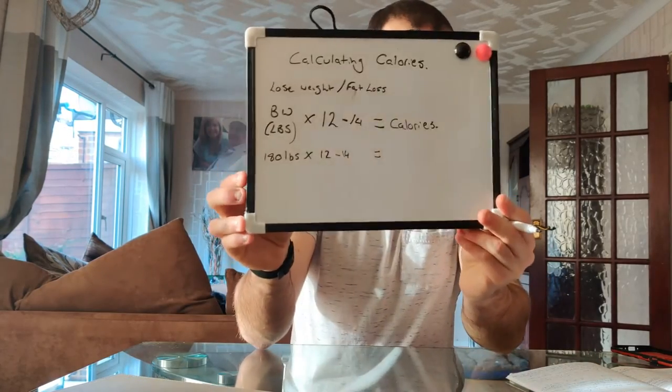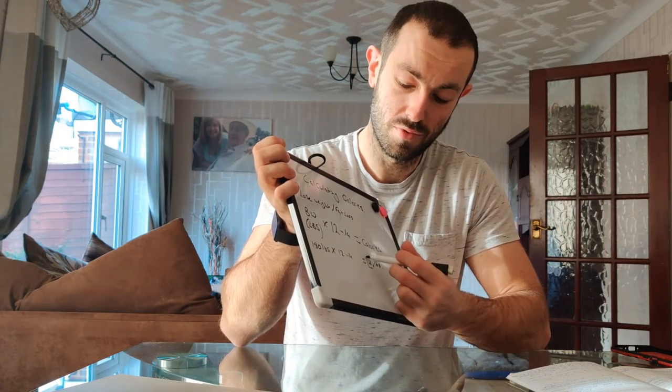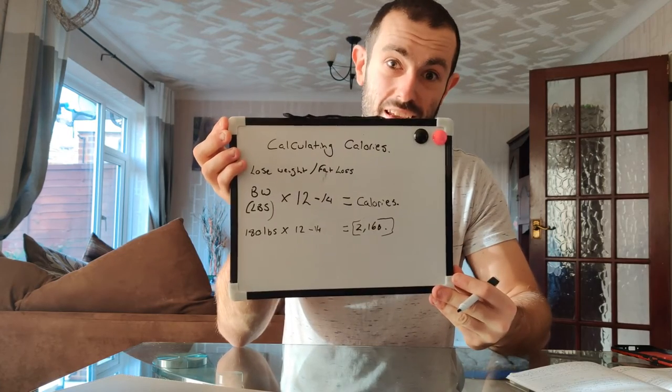Let's say you are a 180 pound person. Times that by 12 if you want a stricter calorie deficit, which means you're going to lose weight faster and not be able to eat as much. Or ramp it up and times it by 14, which means you'll eat slightly more but lose weight probably between a quarter to half a pound a week. For a 180 pound male at the maximum deficit, 180 times 12 gives you 2,160 — so your fat loss calories would be 2,160.